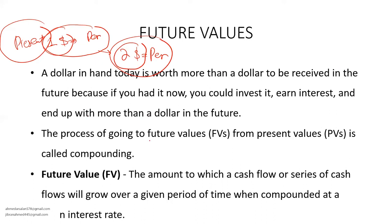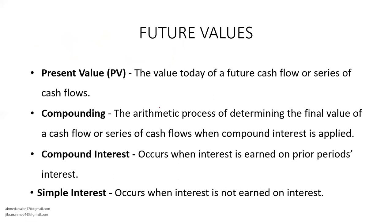The process of going from a present value to a future value is called compounding. The future value is the amount to which a cash flow or series of cash flows will grow over a given period of time when compounded at a given interest rate. The formula is FV = PV × (1 + i)^N. Present value is the value of the dollar today. Compounding is the arithmetic process of determining the final value of a cash flow when compound interest is applied.